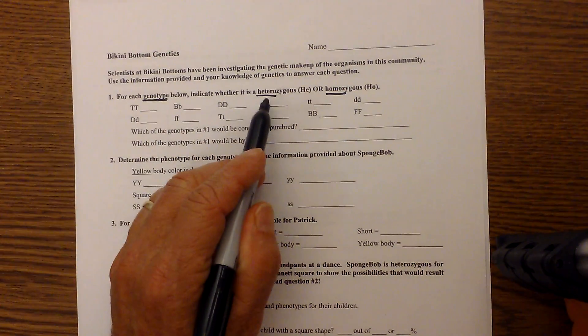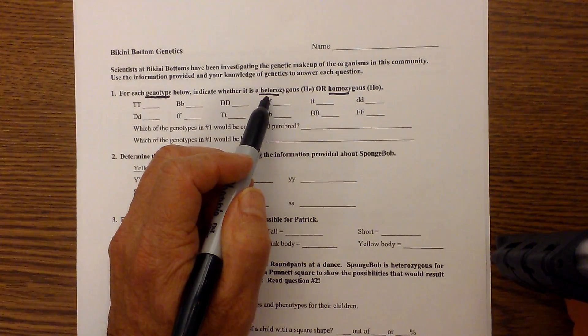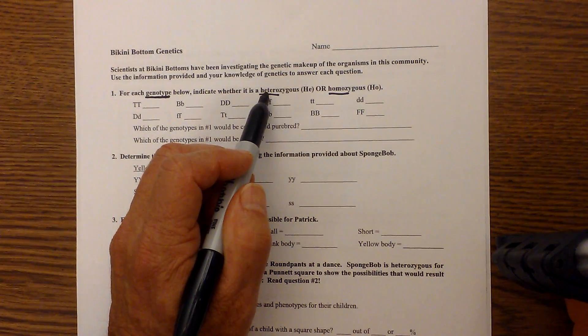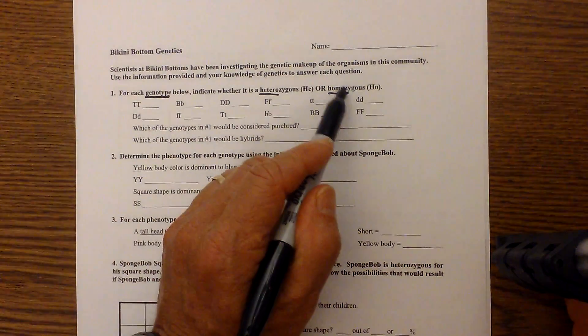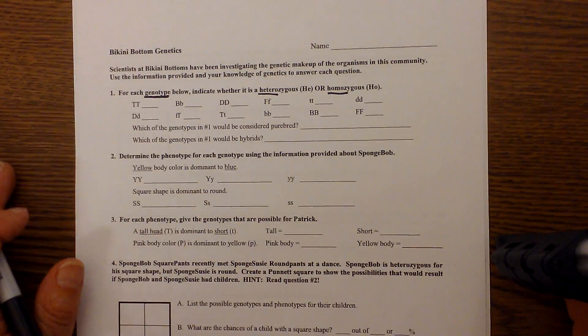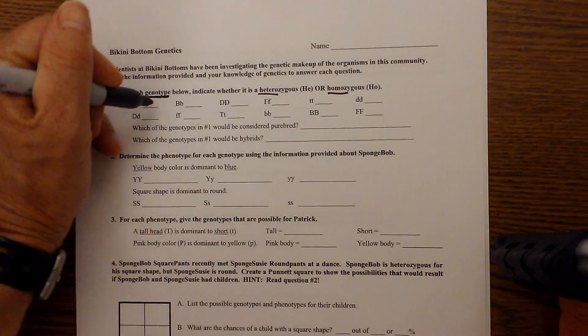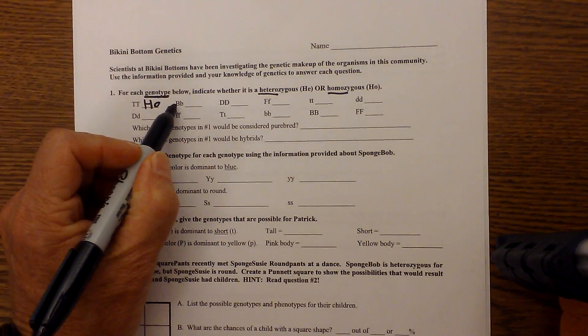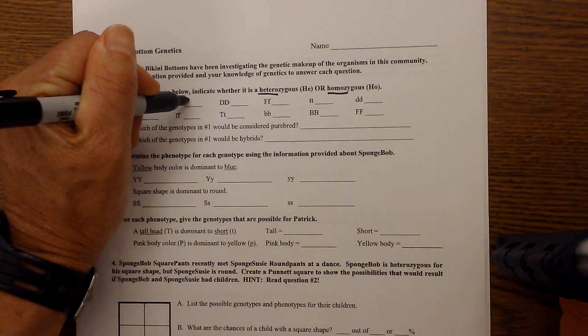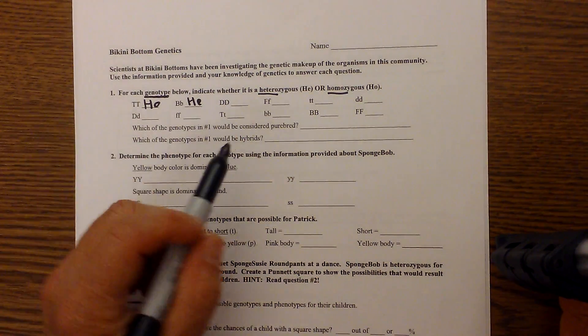So let's first practice. Heterozygous is a genotype in which you have different alleles. You have a capital letter and a lowercase letter and homozygous are both the same. So in this activity let's identify the homozygous and so big T would be homozygous and I'm going to write HO. This is big B, little b, so this would be heterozygous and I'm going to write it HE and I'll do a couple more. I think you're getting the hang of it.